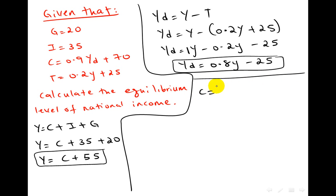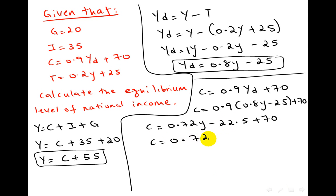Now, C equals what? Take this formula. C equals 0.9YD plus 70. Instead of this YD, plug in this formula, which will give you this one. Now open the brackets. If you add this together, you'll find 47.5. Again here we found another formula.